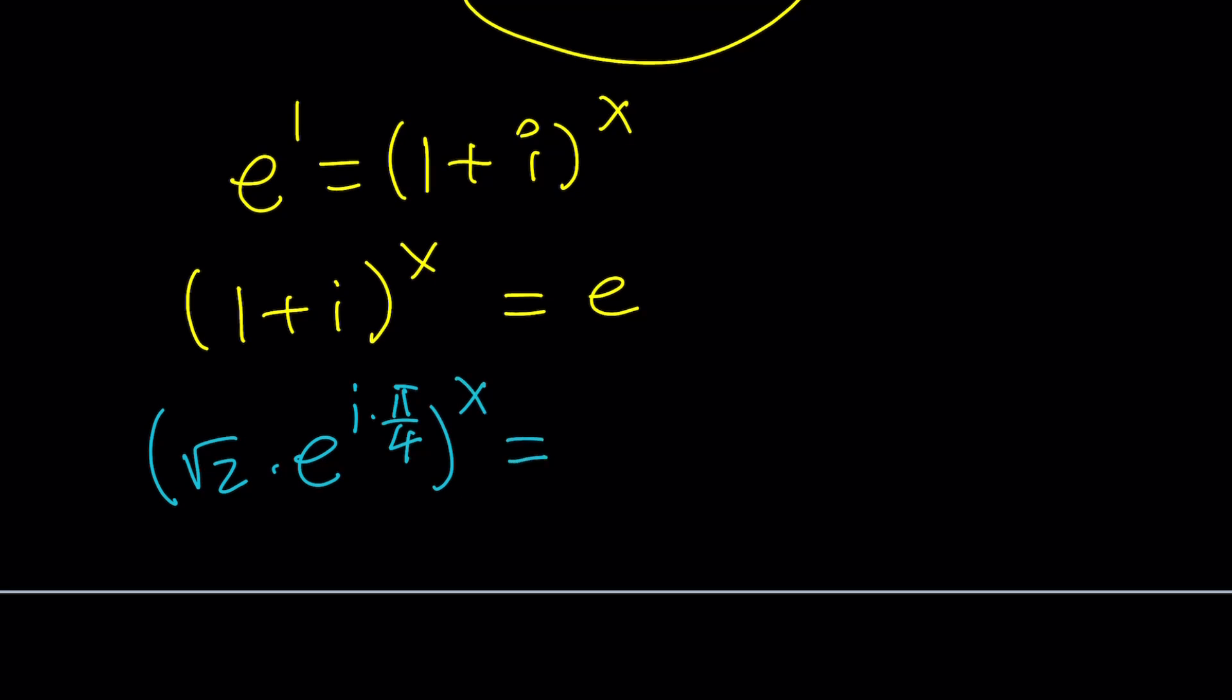Now, e is... how do you write it as a complex number? E is a real number, so it's going to be on the real axis, e units from 0. But notice that it makes an angle of 0 radians or 2π or 4π radians. In other words, e can be written as e·1, and 1 can be written as e^(2πni), where n is an integer.